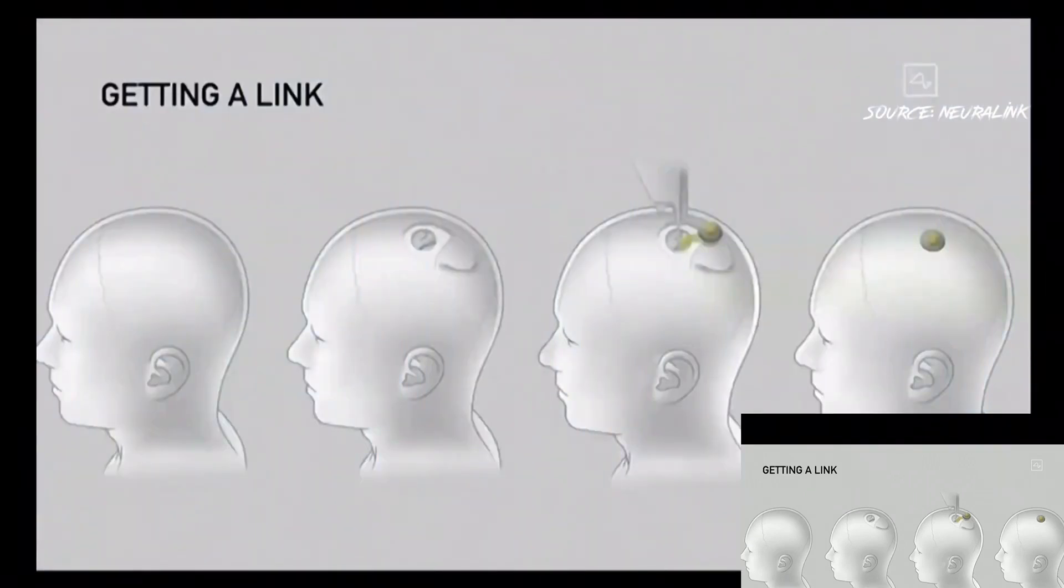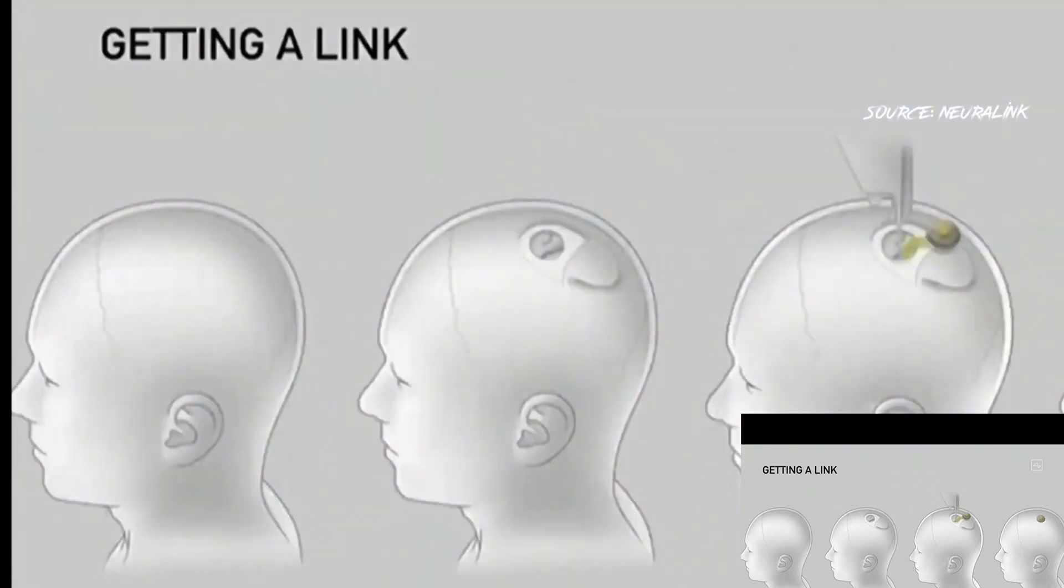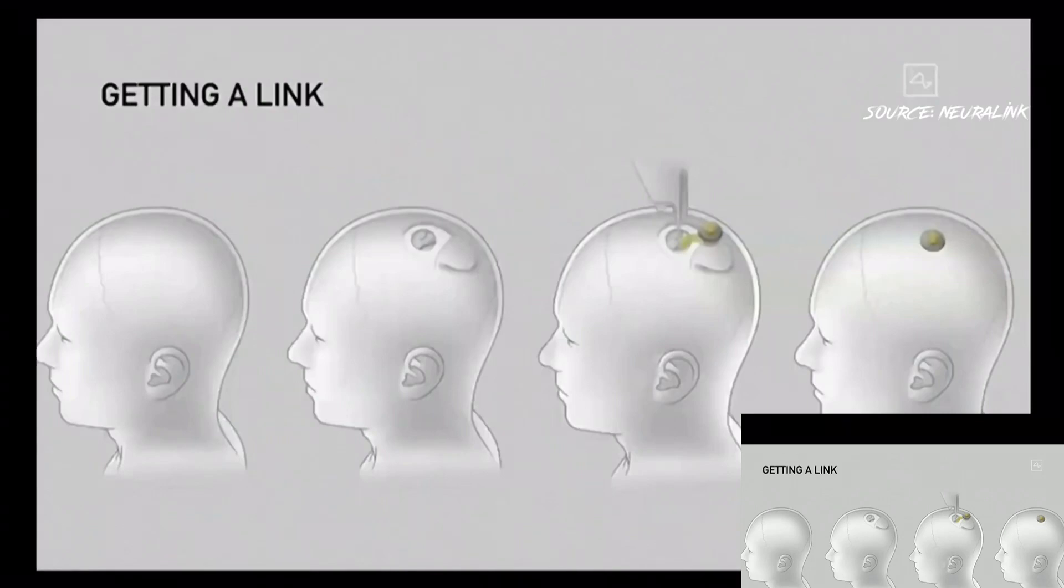So in terms of getting a link, it's essentially open a piece of skull. You remove about a coin-size piece of skull. Then the robot inserts the electrodes.